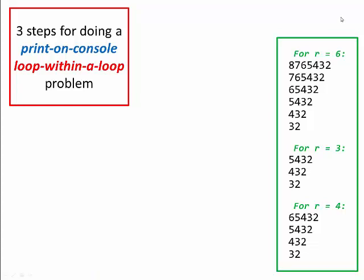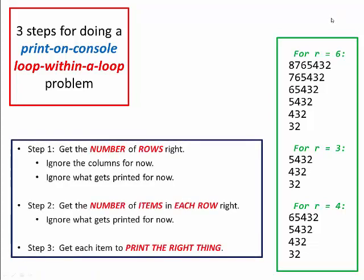The three steps involved here are: first, to get the number of rows right — so here to get six rows, three, four — at that point ignoring the columns, ignoring what gets printed. Once you've got that working, then and only then, you get the number of items in each row right, still ignoring what you're actually printing. Finally, you get each row to print the right things and then you're done.